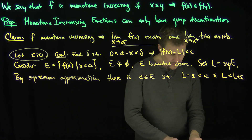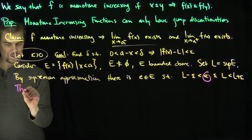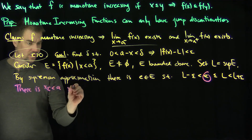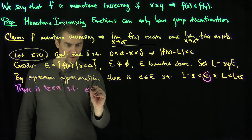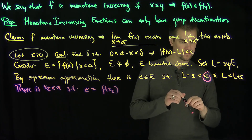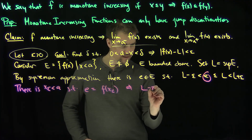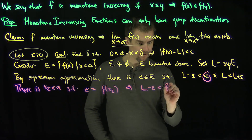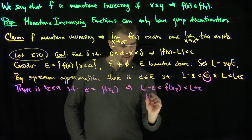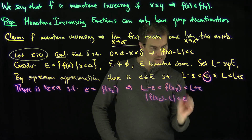Now I know that e comes from the set E, which means there exists x_ε less than a such that e equals f of x_ε. This statement says that l minus epsilon is less than f of x_ε, which is less than l plus epsilon — which exactly says that the absolute value of f of x_ε minus l is less than epsilon.